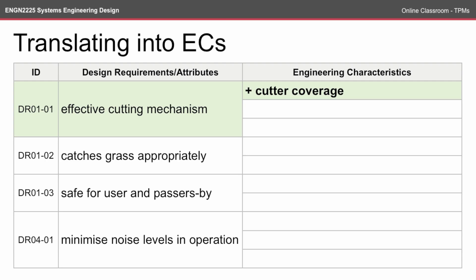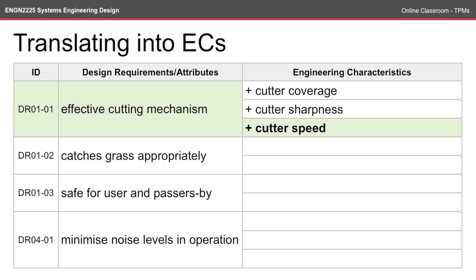An effective cutting mechanism could be measured by cutter coverage. Note that there's a plus sign here, which means we're looking to maximize cutter size, though it's understood that there's some natural limit — we don't want a cutter coverage of, say, 10 meters squared, because that might make the lawnmower too hard to push. An effective cutting mechanism might also mean cutter sharpness: the sharper it is, the easier it will be to cut grass. Likewise with cutter speed — perhaps there's a trade-off between cutter sharpness and cutter speed, but by itself we want to increase the cutter speed.